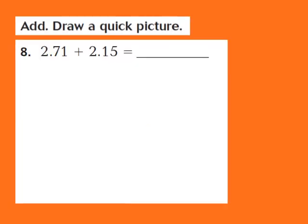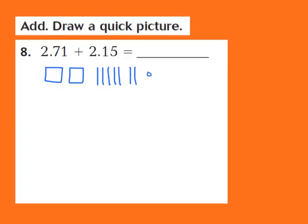Now let's take a look at question number 8. Our job is to add and draw a quick picture. For question 8, they give us 2 and 71 hundredths plus 2 and 15 hundredths. For the first addend, I have a 2 in the 1s place, so I draw 2 flats. I also have a 7 in the tenths place, so I draw 7 longs. And I have a 1 in the hundredths place, so I draw 1 small cube. That's my model for 2 and 71 hundredths.